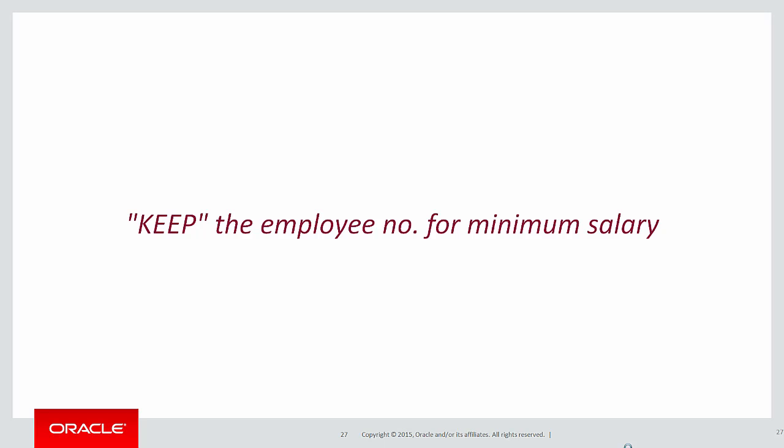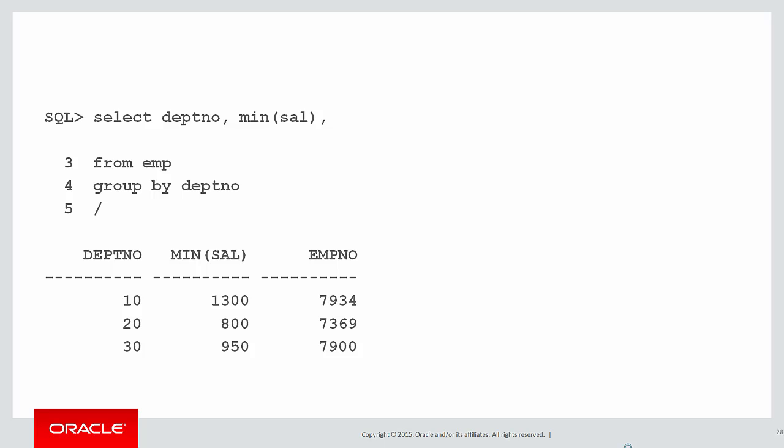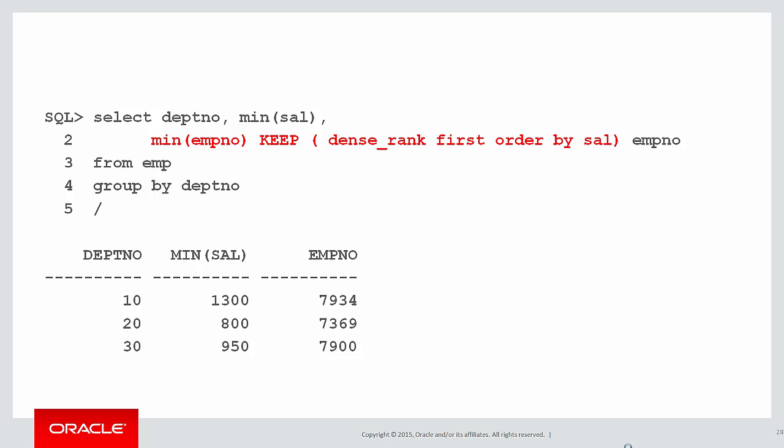In English terms, we want to keep the employee number for whom the minimum salary was discovered, and that leads us on to the KEEP clause. Here is our query as we had it before — department number and MIN salary. The KEEP clause syntax looks like this: I want to keep the minimum employee number, minimum being defined by ordering by salary, picking up the first based on the dense ranking.